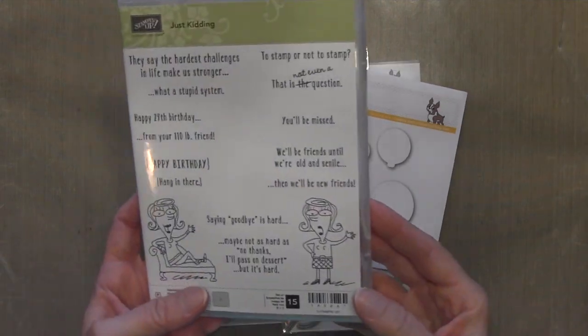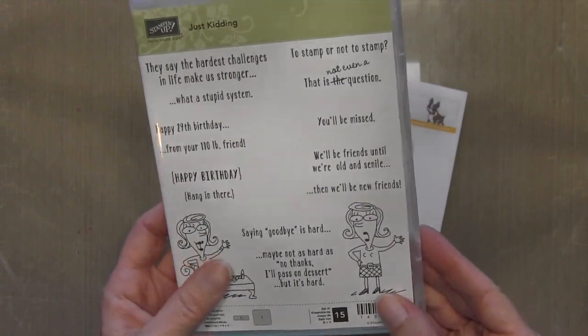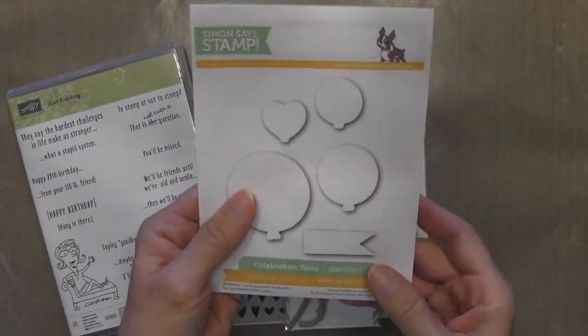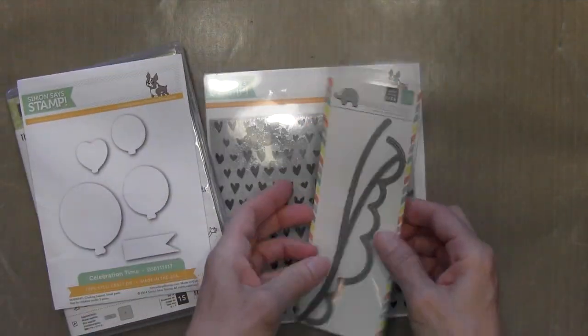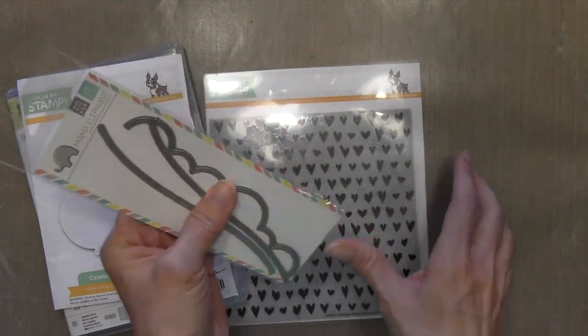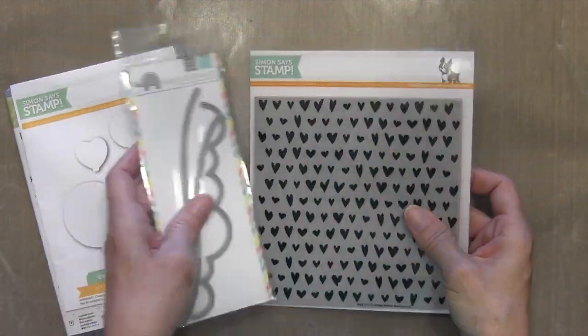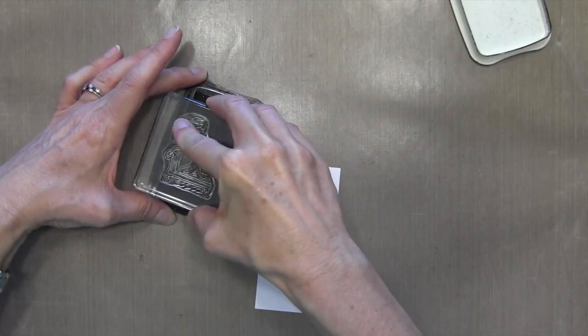All right, the supplies I'm going to be using: first is this Just Kidding set by Stampin' Up. It just came out, it's a new photopolymer, I love it. Celebration time, just some balloon dies by Simon Says Stamp. I've got some landscape trio, they're just border dies by Mama Elephant and this hand-drawn hearts background by Simon Says Stamp.